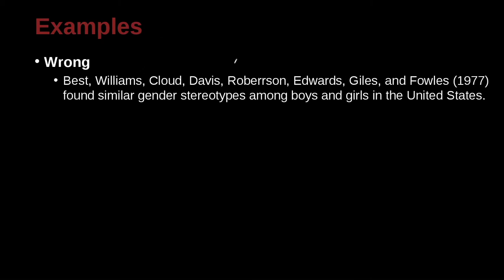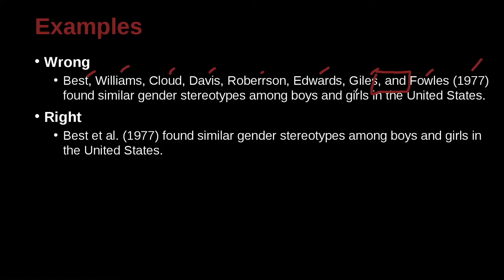Best, Williams, Cloud, Davis, Roberson, Edwards, Guile, and Fowles (1977) found similar gender stereotypes among boys and girls in the United States. That's eight authors. We have a comma and A-N-D before the last name, which looks good. But the problem is there are too many authors. Remember, for three or more you can use 'et al.', but for seven or more, you use 'et al.' even the very first time. That's what we've done here — even though it's the first mention, we use 'et al.'